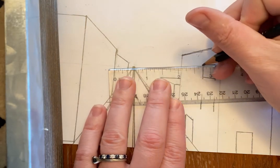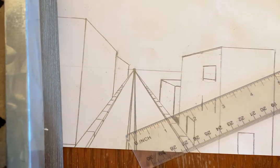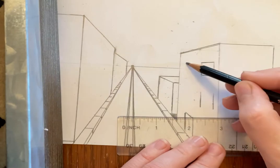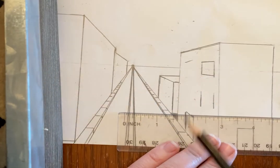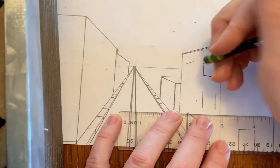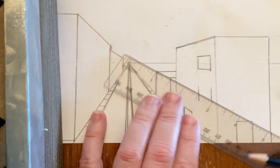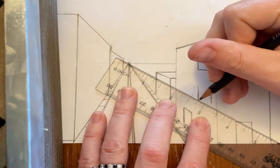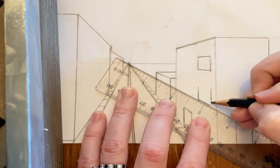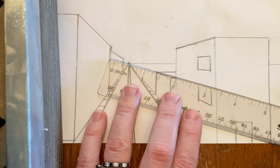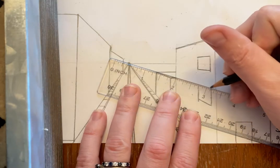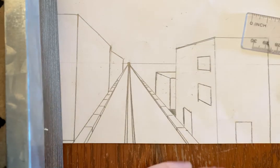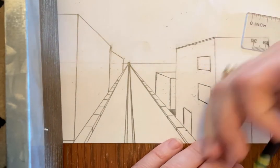Remember there's only three types of lines in this drawing: vertical, vanishing, and horizontal. There are no diagonal lines in this unless it's actually a vanishing line. Don't be drawing lines like this because unless it touches that point, that line is wrong. So I'm gonna do this again, go to the bottom here and connect.